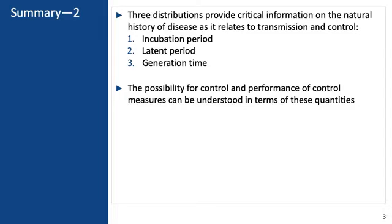Possibility for control and performance of control measures can be understood in terms of these quantities — both the natural history quantities and the transmission quantities. So this ends our lecture on the transmission of infectious diseases and basic disease dynamics.